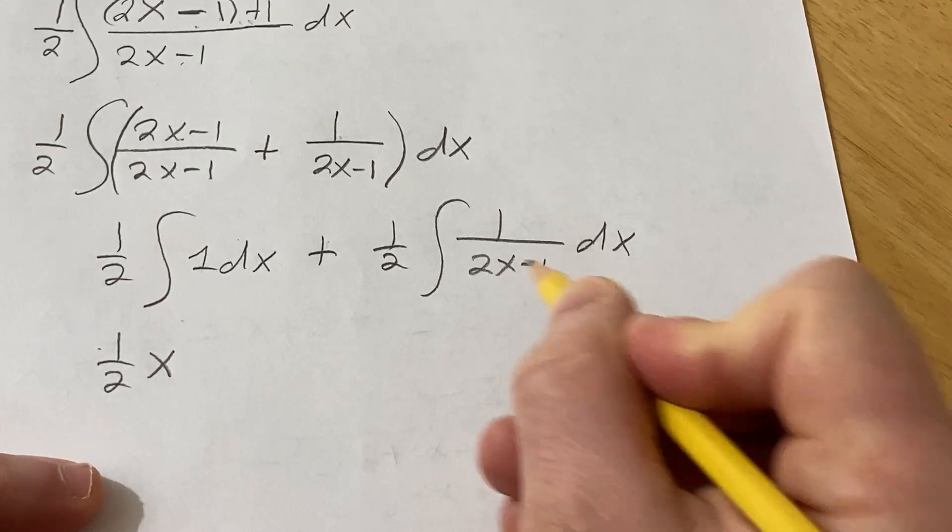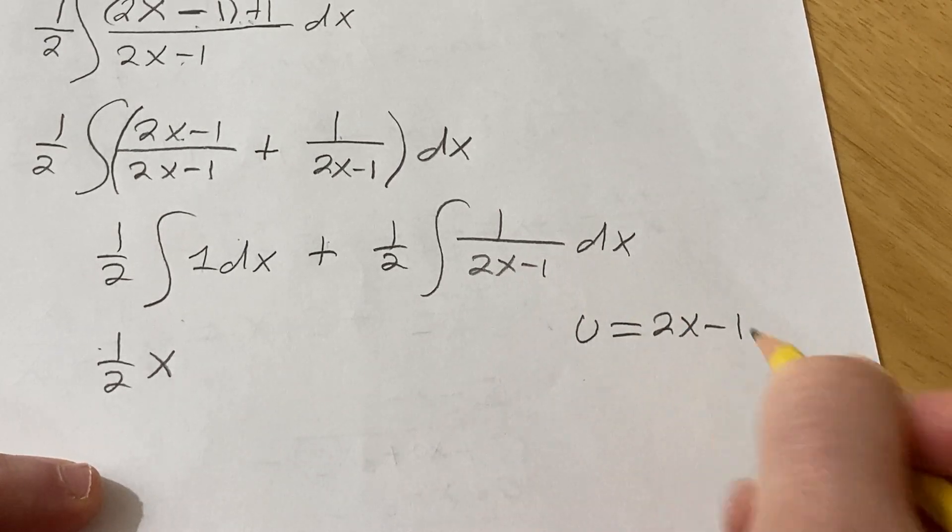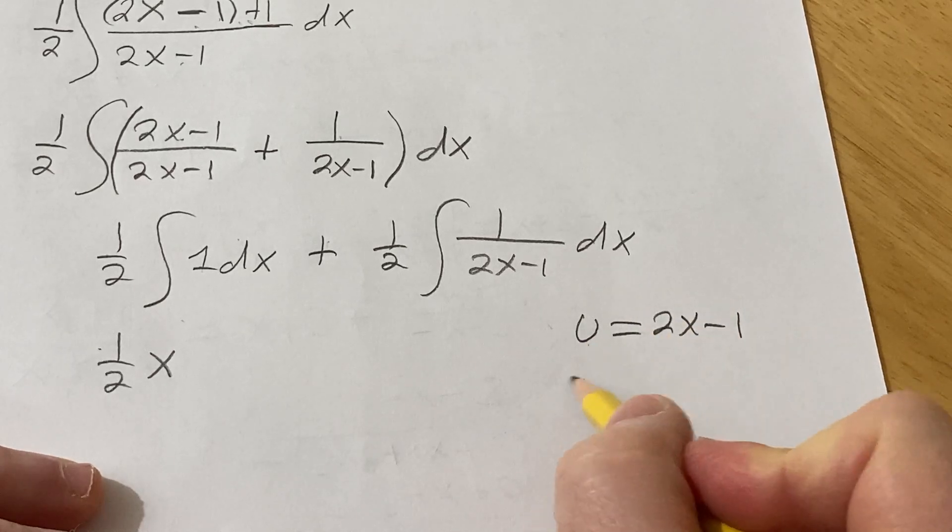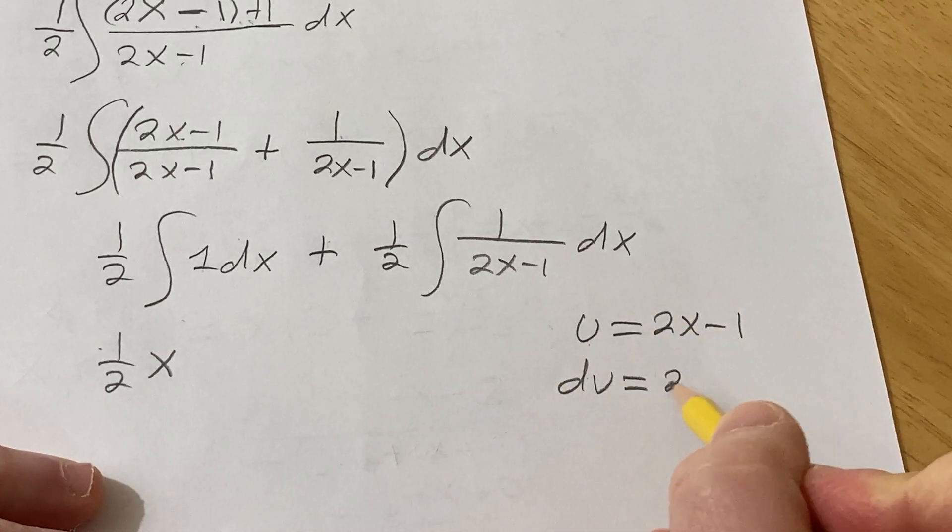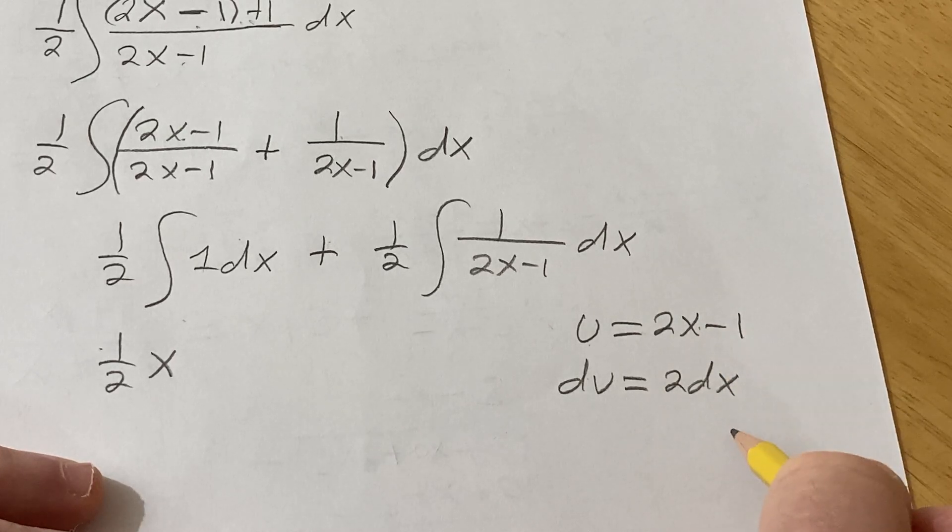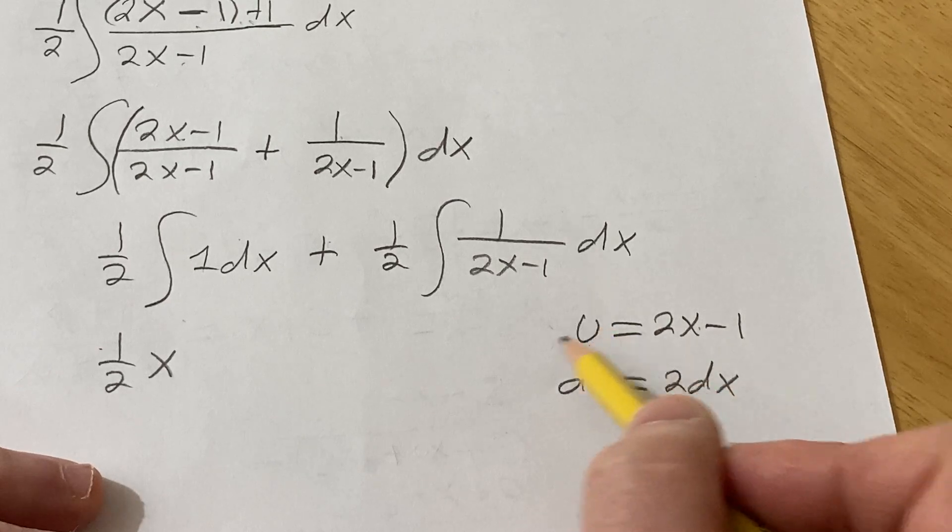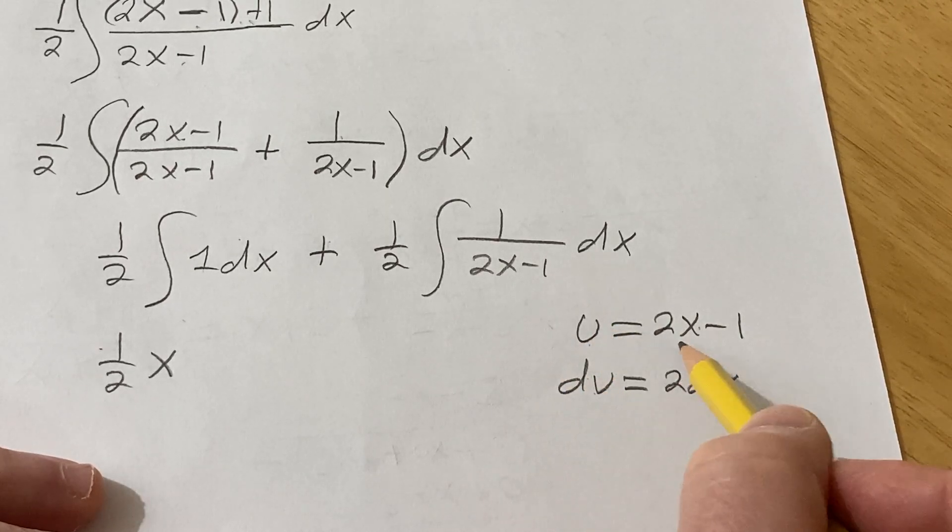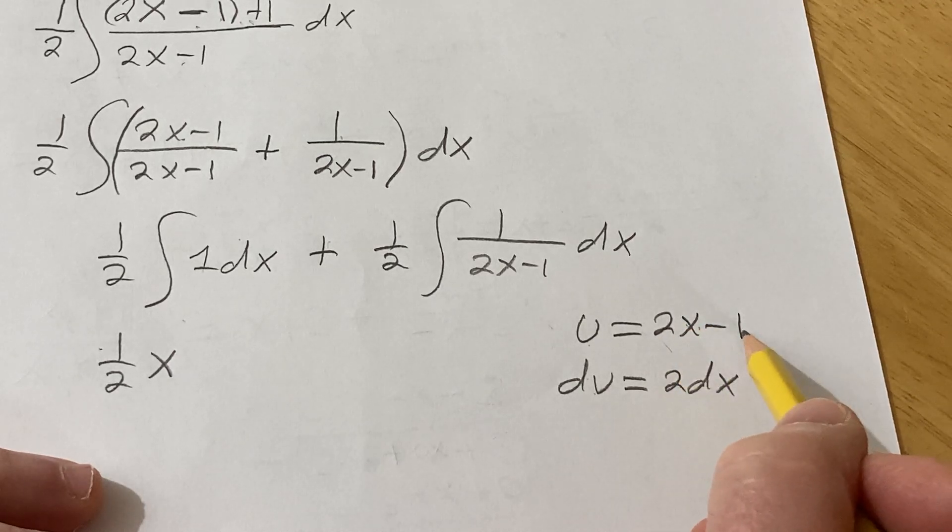Let's let u be the piece on the bottom. And so now we'll take the derivative of both sides of this equation. So this will be du equals 2 dx. Because the derivative of x is 1, the derivative of negative 1 is 0. This is called differential notation, by the way. So basically we're just taking the derivative of both sides. The derivative of u is du. The derivative of x is dx. We have a 2 here. And the derivative of negative 1 is 0.